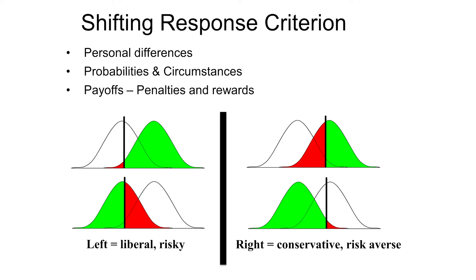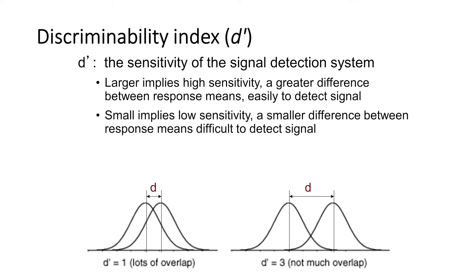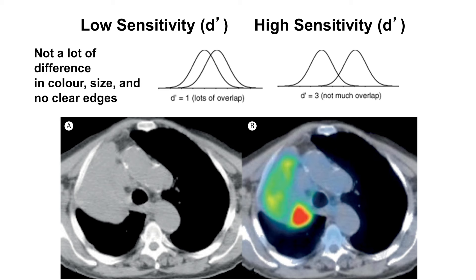The discriminability index, represented as D', is the sensitivity of the signal detection system. A large D' indicates high sensitivity, so there's a greater difference between signals, which means it's easier to detect the presence or absence of the signal. A small D' means low sensitivity — a smaller difference between responses means it's more difficult to detect the signal. The further apart the signals are, the easier it is to discriminate. Think about hearing a very low frequency bass tone and a high frequency treble tone versus two similar mid-frequency tones. Another example is in MRIs — we have a low discriminability index with grey, black, and white images, and a higher discriminability index with color contrast MRI.